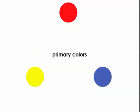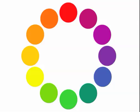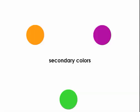First, we've got primary colors: red, yellow, and blue. In terms of the color wheel, all colors are created from these colors. Because we have secondary colors, which are created from mixing two primary colors. So red and blue make purple, blue and yellow make green, and yellow and red make orange.